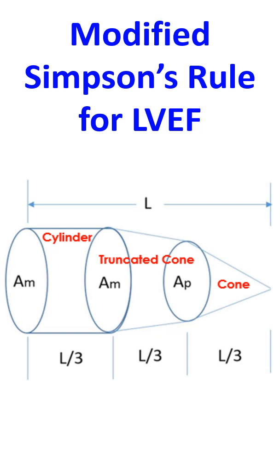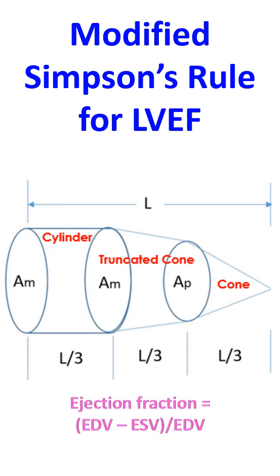Ejection fraction is equal to stroke volume divided by end diastolic volume. Stroke volume is the difference between end diastolic volume and end systolic volume. In summary, ejection fraction is the fraction of end diastolic volume of the left ventricle which is ejected out in systole.